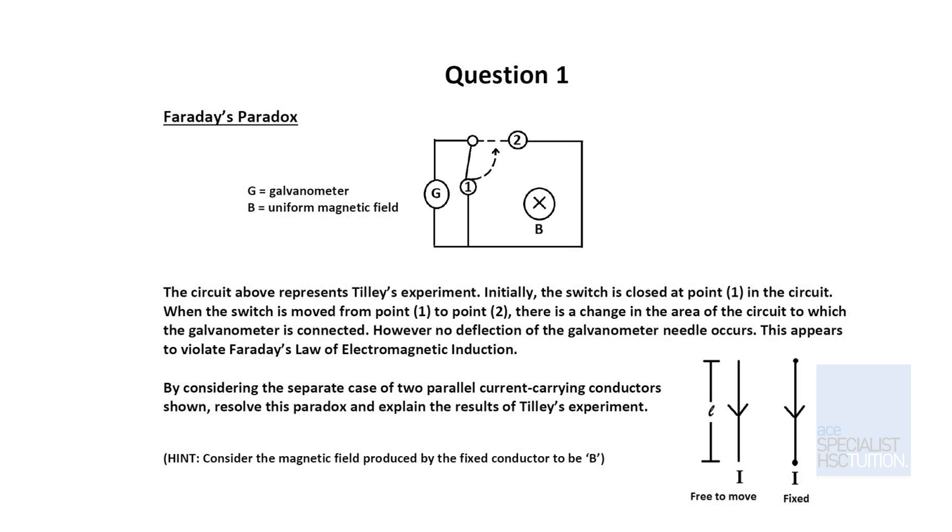You'll soon switch to position 2, at which point we don't register any voltage on our galvanometer even though there's been a change in the area and hence a change in flux. We're going to try and solve this paradox by considering two parallel current-carrying conductors, which is shown in your diagram number 2.